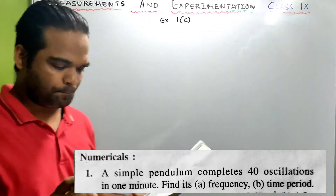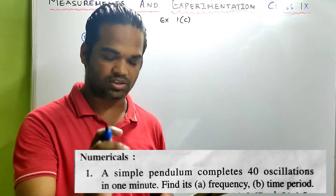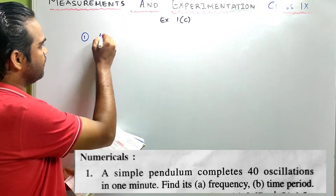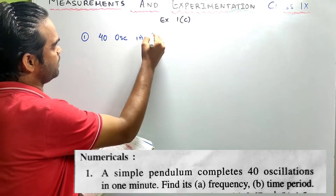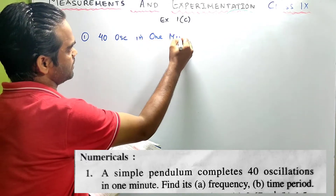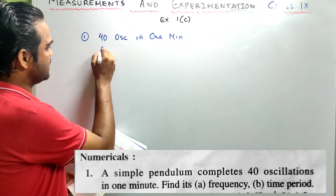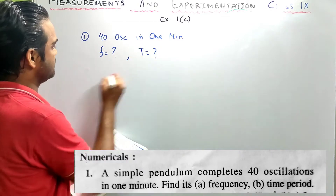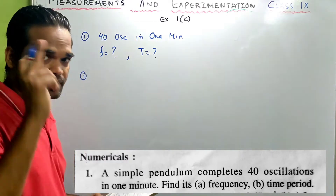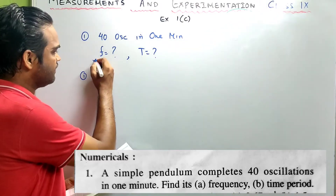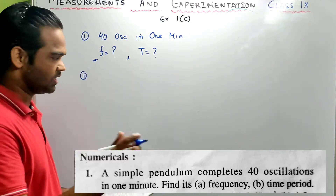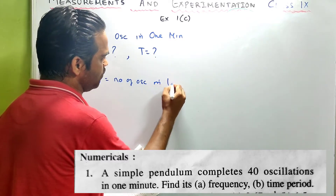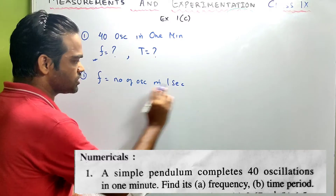What is given? A simple pendulum completes 40 oscillations in one minute. Let us write the data: 40 oscillations in one minute. They've asked to find its frequency and find its time period.